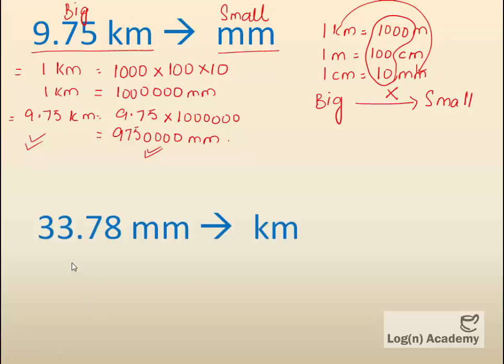We will see small units converted to big units. According to the conversion chart, 1 mm equals 1 over 1000 x 100 x 10, which is 1 over 1,000,000 km.